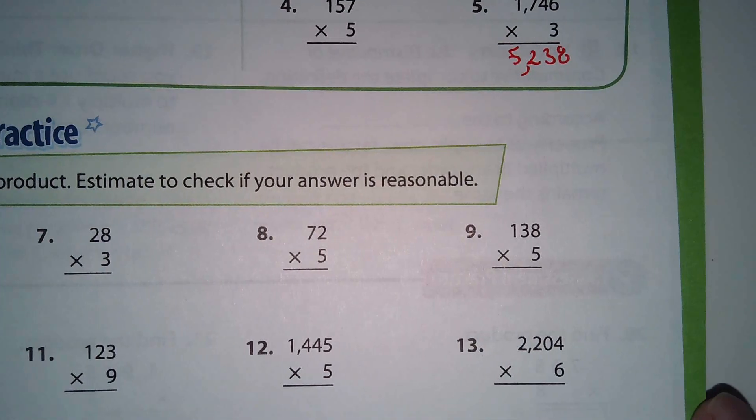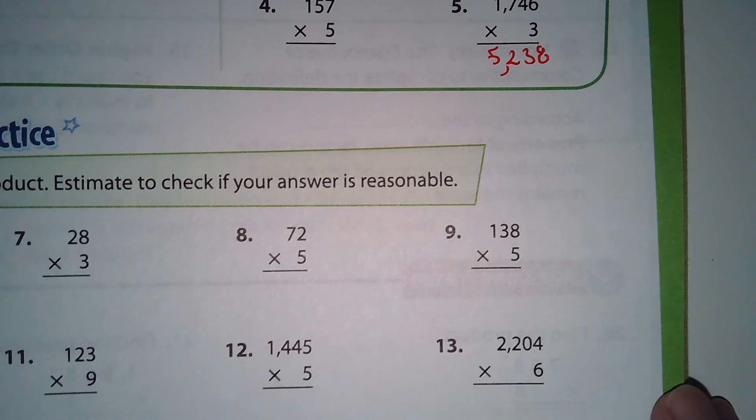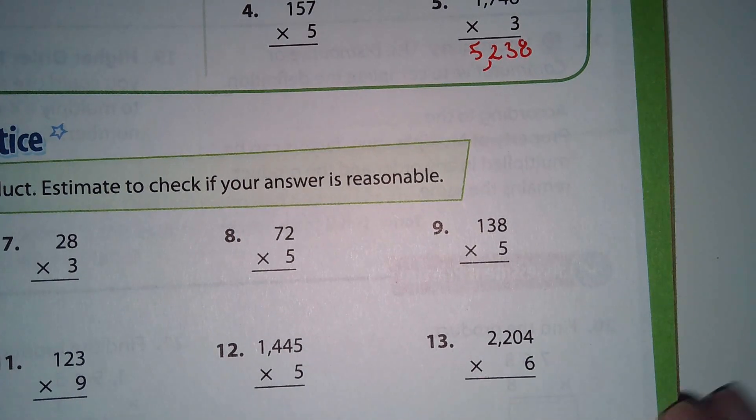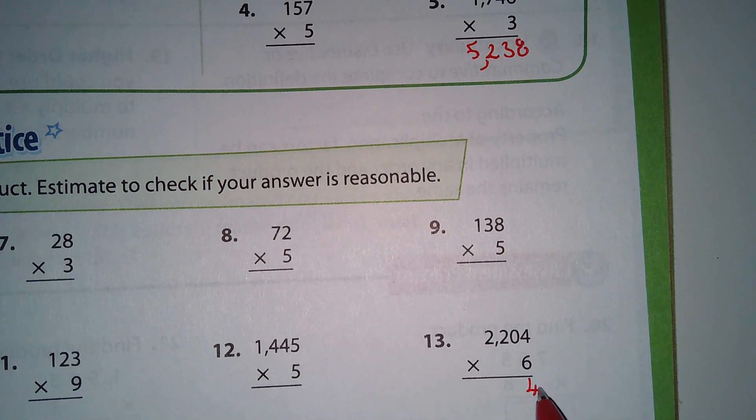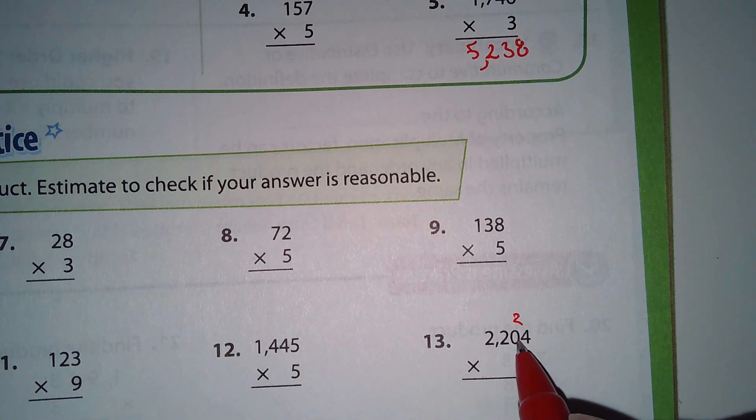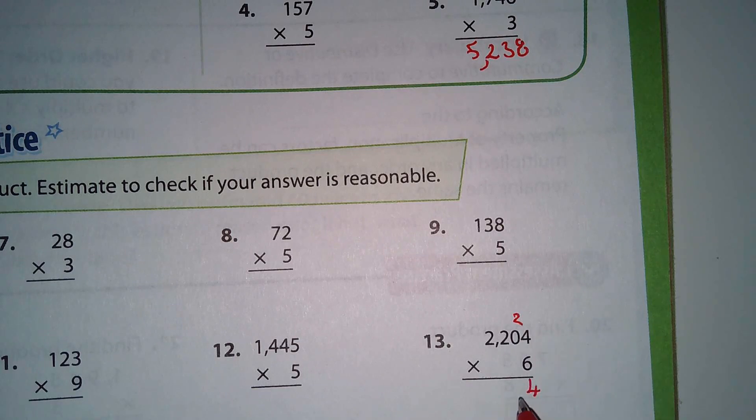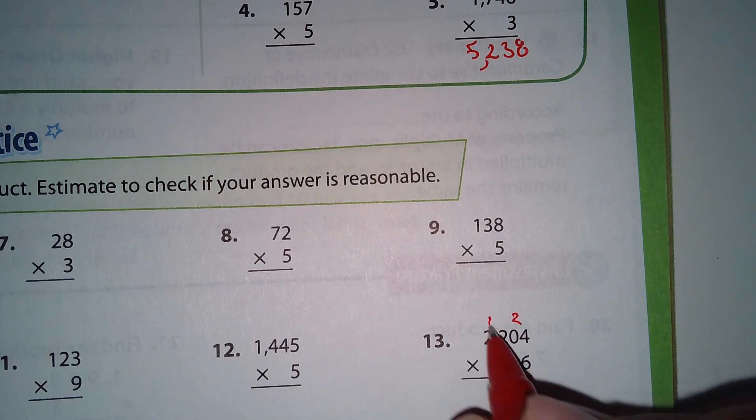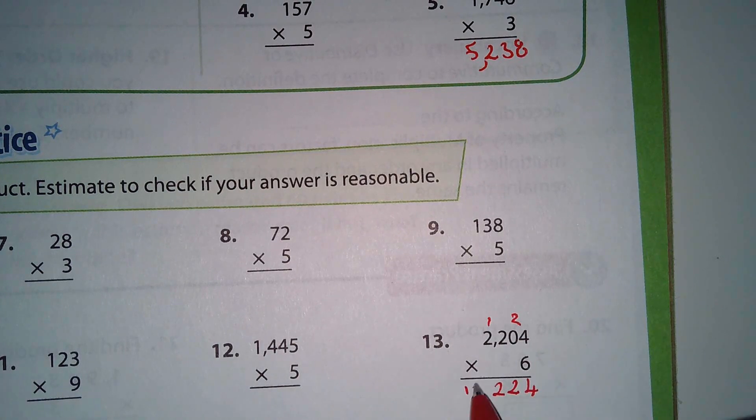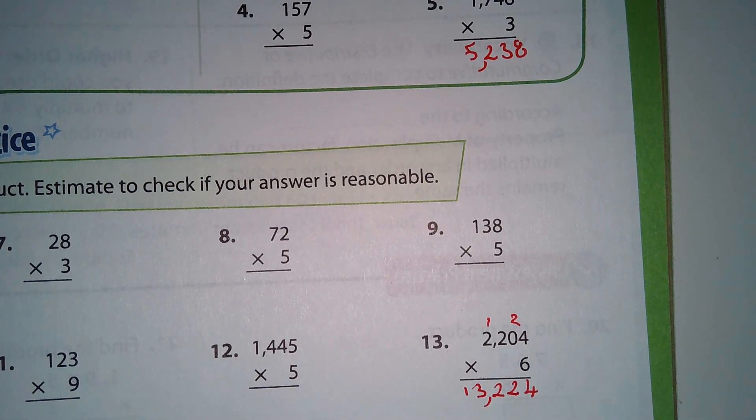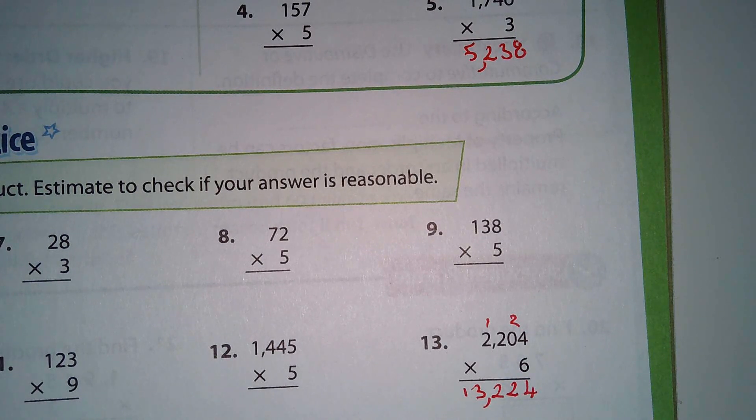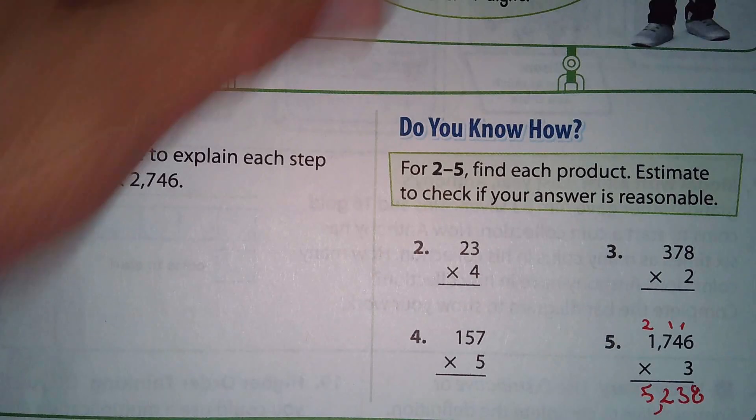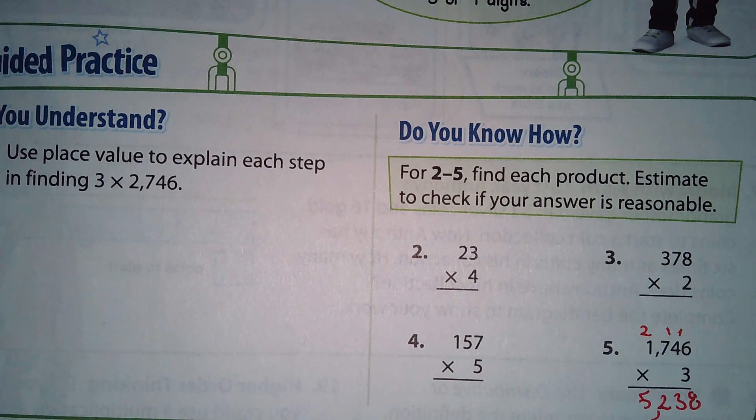Let me do one more here, number 13 at the bottom of the page. Six times four is 24, put down the four, carry the two. Six times zero is zero, plus two is two. Six times two is twelve, put down the two, carry the one. Six times two is twelve, plus one is thirteen. So the answer is 13,224.